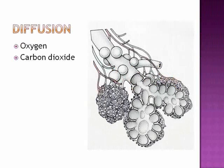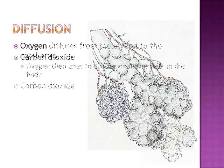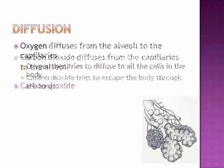Diffusion also has to do with oxygen and carbon dioxide, but here we're looking at the alveolar level. The alveoli are surrounded by capillaries. Oxygen diffuses from the alveoli to the capillaries, and oxygen then tries to diffuse to all the cells in the body. The carbon dioxide is trying to escape the body through the lungs, so it diffuses from the capillaries into the alveoli, and then out of the body.